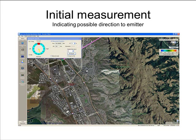It is important to note that during the collection of data shown in this presentation, there was no operator interaction with the system while the vehicle was being driven. Both good and bad direction finding measurements are shown exactly as the system measured them, to give you a real-world example of what to expect when using the system and the tools available to mitigate these types of issues. On the main body of the screen there is a background map displayed. There are several types of map that can be used.